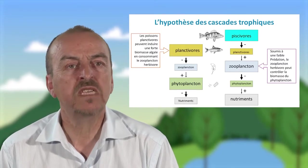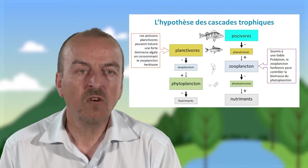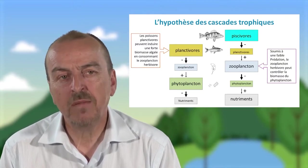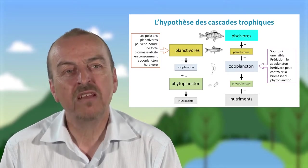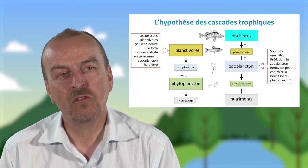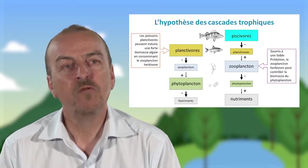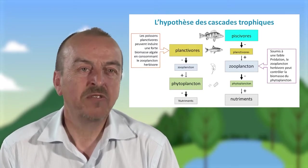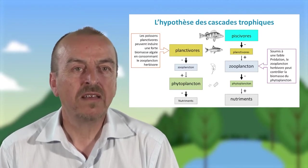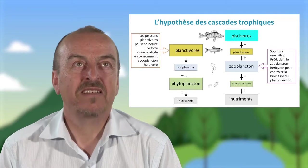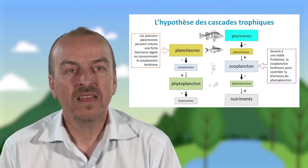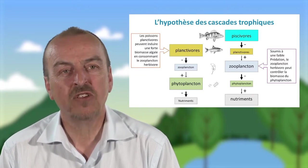Si on prend maintenant le schéma sur sa partie droite, le système est dominé par des poissons piscivores en sommet de chaîne. Ces poissons piscivores contrôlent les poissons planctivores, qui, maintenus à des effectifs faibles dans les lacs, ne parviennent pas vraiment à contrôler le développement du zooplankton. Ce même zooplankton peut donc contrôler en retour le phytoplankton. Vous pouvez donc voir avec ce schéma que pour un même niveau d'apport en nutriments, on peut avoir des lacs avec une forte biomasse algale — donc des lacs très turbides, très verts — ou des lacs avec une faible biomasse algale, donc des lacs très bleus, très transparents.